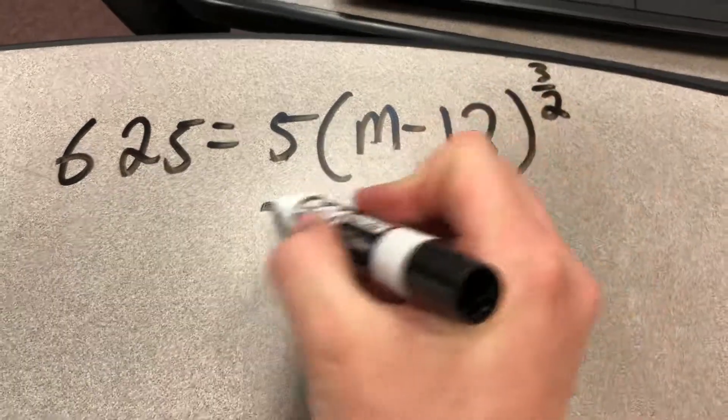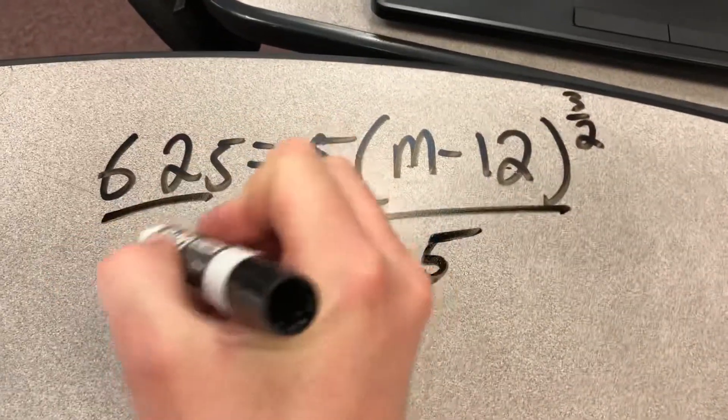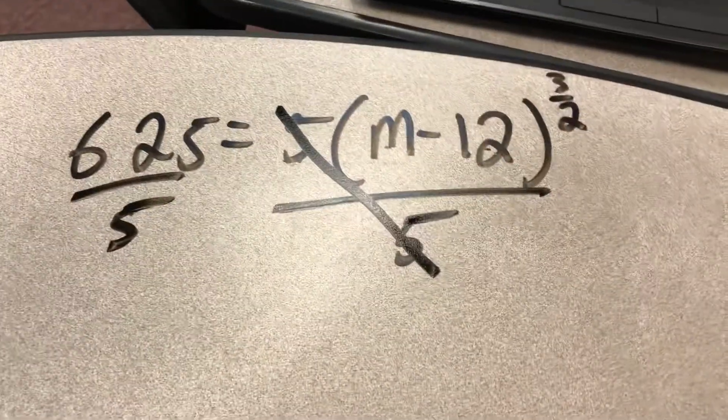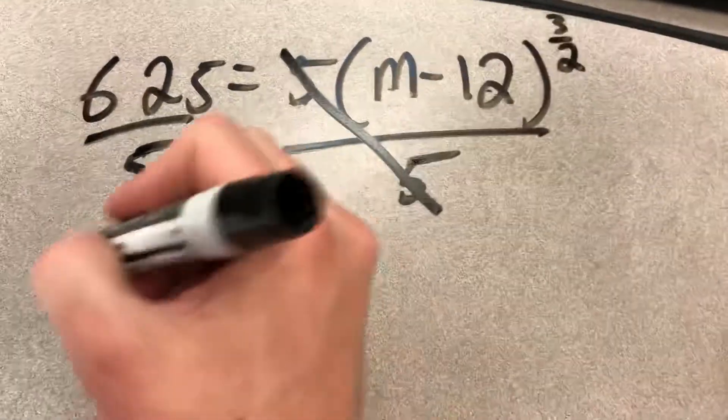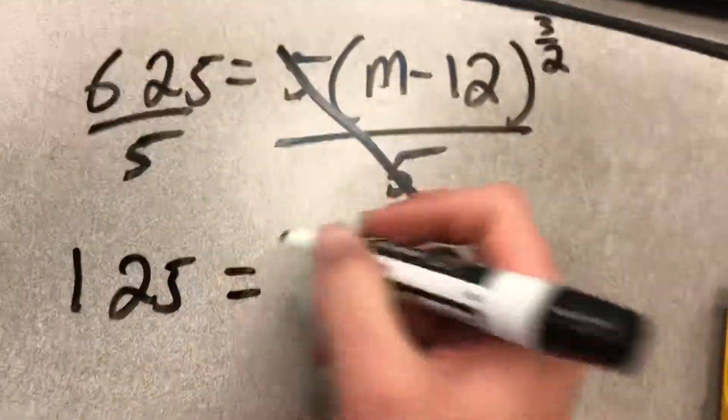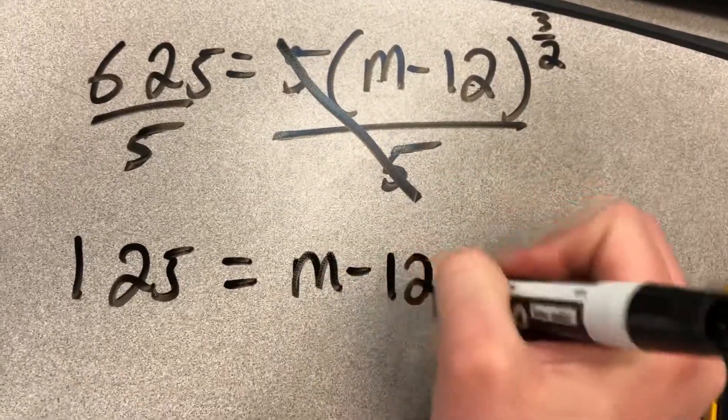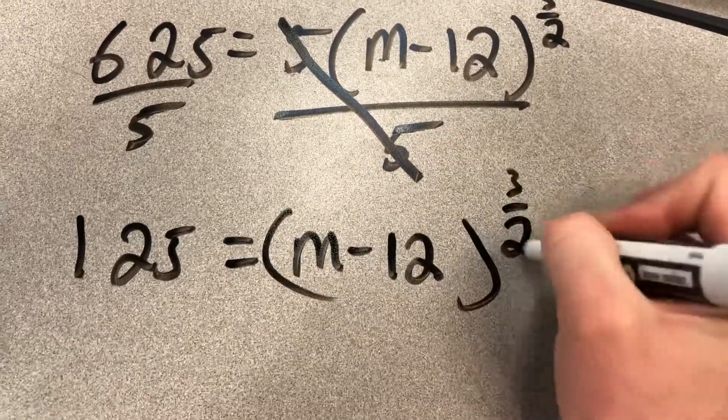But first we're going to deal with that 5. We can just quickly divide each side by that 5. So we get 125 equals m minus 12 to the 3 halves.